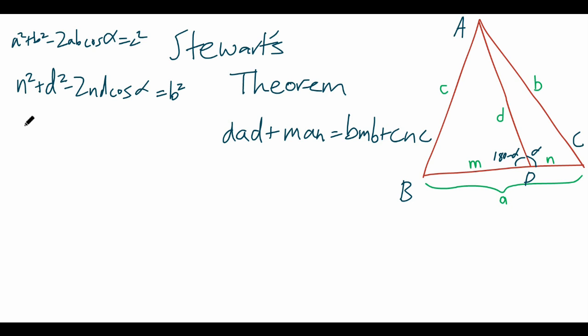Okay. So, we do the same thing. So, D squared plus M squared, minus 2DM cosine, 180 minus alpha equals C squared.